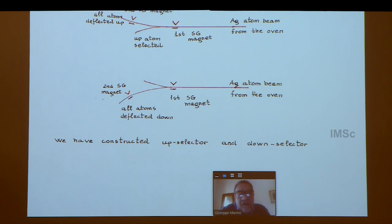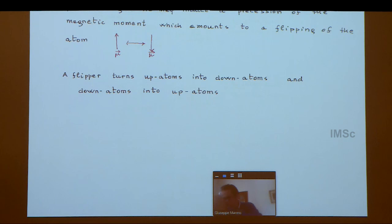If you perform successive Stern-Gerlach measurements, you can select up atoms and down atoms, constructing an up selector and a down selector. Next slide, please.